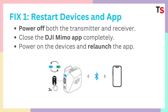Fix 1: Restart devices and app. Power off both the transmitter and receiver. After that, simply close the DJI MIMO app completely. If you are using iPhone, simply swipe up all the apps and close it completely. Otherwise, in Android, take all the slides out and close it completely. After that, power on the devices and relaunch the app.